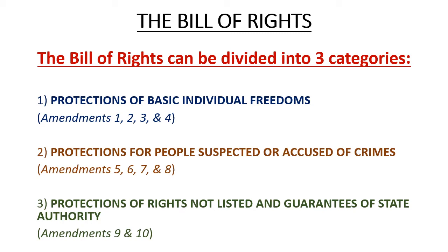This will be another quiz question: the Bill of Rights and its ten amendments can be sorted into three broad categories. Amendments one through four are protections of basic individual freedoms. Amendments five through eight are protections for people suspected or accused of crimes. Amendments nine and ten are protections of rights not specifically listed and guarantees of state authority.